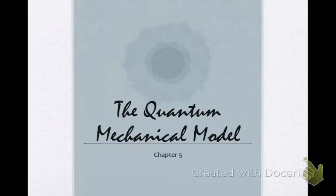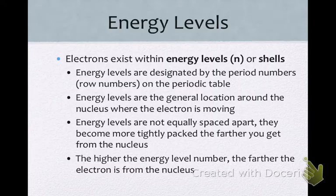Okay, I'm going to talk about the quantum mechanical model. As we mentioned before, the quantum mechanical model expands upon Bohr's idea. With Bohr's idea of the atomic model, he said that electrons existed within energy levels, and that idea is still true. So electrons exist within energy levels that we sometimes designate as the letter N, or some people also call them shells. Energy levels are designated by the period numbers, which are the row numbers on the periodic table.